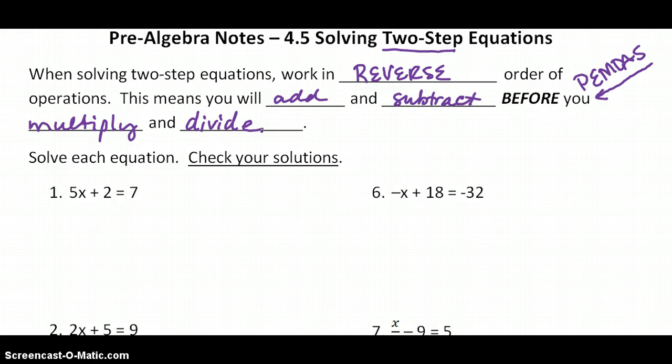Because just like in our lesson a couple of days ago, we're doing the inverse operation. We're trying to undo what has been done to x. So when we're undoing what's been done, we're going to do it in the reverse order. So look at our first example, 5x plus 2 equals 7.